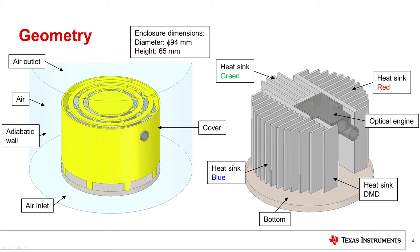There are four separate heat sinks in this design: three for LEDs red, green and blue, and one for the DMD.